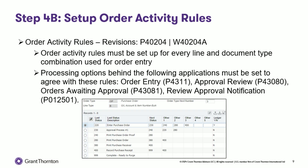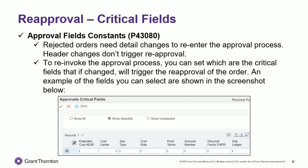Next, we'll look at how orders get triggered for re-approval. If an order is rejected, modified, and then sent back through the approval process, it will appear on the approval review screen with a caret next to the line. In the orders awaiting approval screen, it will also show as amended in the notes section. These rejected orders will need detailed changes in the critical fields to re-enter the approval process. You can set which are the critical fields that will act as these triggers.